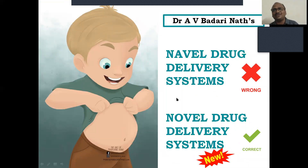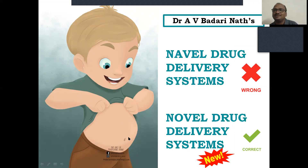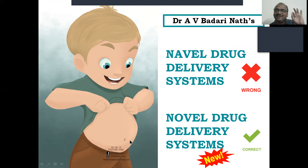Most students are writing the wrong spelling. Novel drug delivery system — N-O-V-E-L — one letter is different. N-A-V-E-L, 'navel,' is different. N-O is the correct spelling; novel means new. Don't write 'navel drug delivery system' — we are studying novel drug delivery system, N-O.